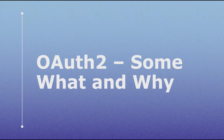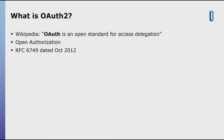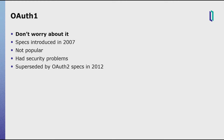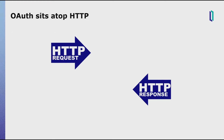OAuth is an open standard for access delegation. It stands for open authorization. It comes from an RFC dated 2012. You're probably asking: what about OAuth 1? In short, don't worry about it. It's older, it was never popular, it had security problems, and it was superseded by OAuth 2 a long time ago. OAuth sits on top of HTTP. The RFC explicitly reads, 'This specification is designed for use with HTTP.' All of the communication is HTTP requests and responses, so you'll be dealing with web clients and web applications.